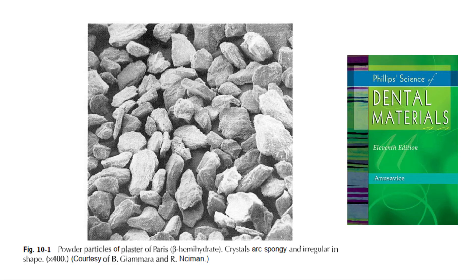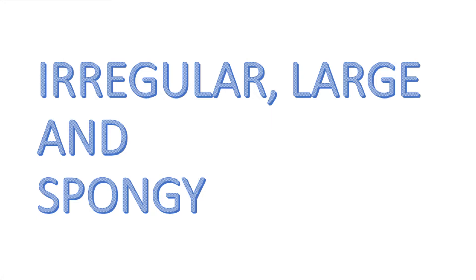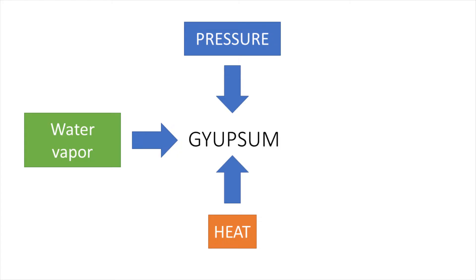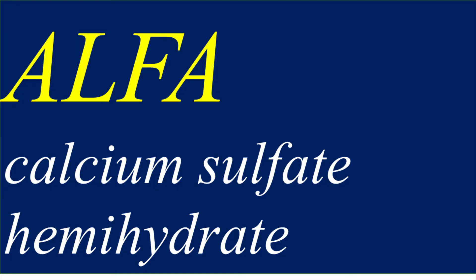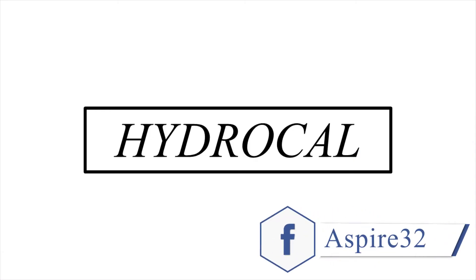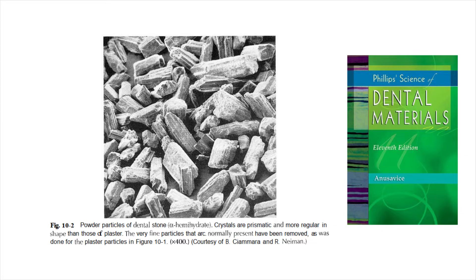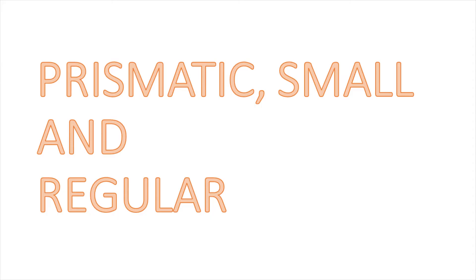If you look at the SEM picture of beta hemihydrate, you will see that the particles are very irregular and spongy in structure. Remember this point as it often comes in the exam. If you heat the same gypsum under pressure with water vapor, you get alpha calcium sulfate hemihydrate, also called hydrocal, commonly marketed as dental stone. Alpha hemihydrate crystals are prismatic, smaller, regular, and less spongy than beta hemihydrate crystals.